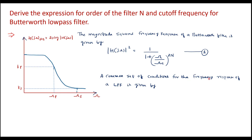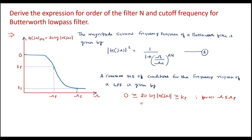A common set of conditions for the frequency response of a low pass filter is given by: 0 ≥ 20·log|H(jω)| ≥ kp for all ω ≤ ωp — we call this equation a — and 20·log|H(jω)| ≤ ks for all ω ≥ ωs — we call this equation b.